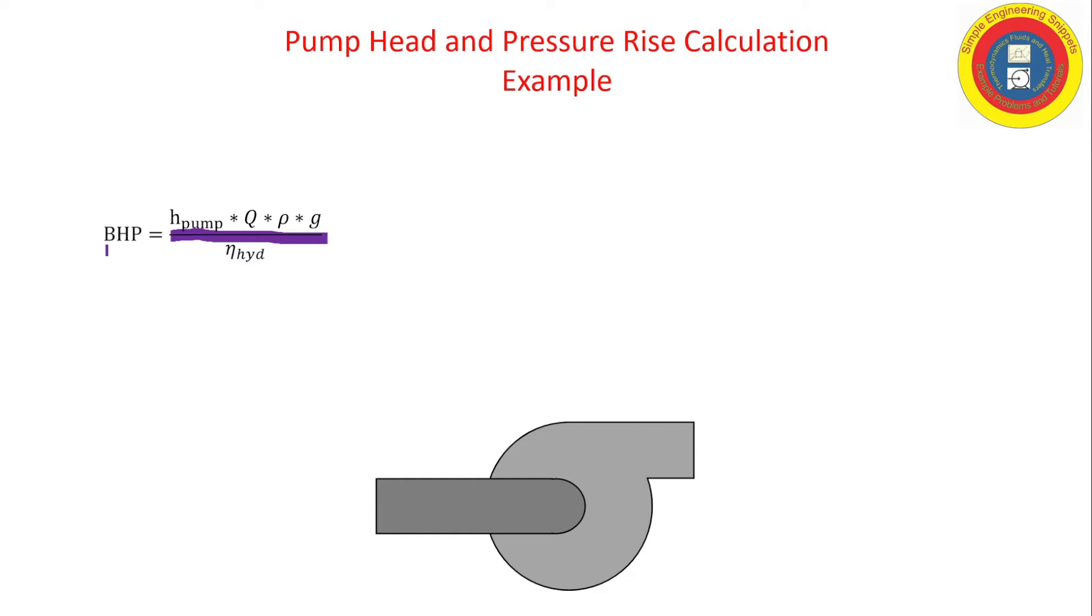So let's do a sanity check on this, look at dimensions. Pump head is energy per weight, volume flow rate is volume per time, and density is mass per volume. If we take the product of density times gravity, we get weight per volume. So we see in the numerator we do turn dimensions of power, and the hydraulic efficiency is unitless and dimensionless.